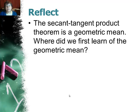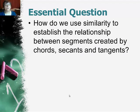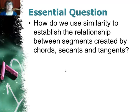The secant-tangent product theorem is actually a geometric mean — you may recall we first saw this when we dropped an altitude on similar right triangles. That gives the same relationship: the product of two numbers equals the square of another. To summarize, we use similarity to establish segment relationships: first identify congruent angles to prove triangles similar, then set up proportions using those segments, which yield the chord-chord, secant-secant, and secant-tangent product theorems.